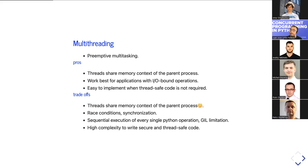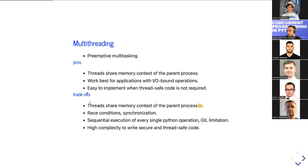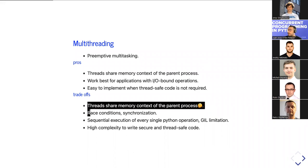Threads sharing memory context is both a pro and a trade-off. If thread-safe code is not required, it's simple. But if we need thread-safe code — for example, carefully updating database connections, pulling from rate-limited APIs — we need to ensure proper locking and careful steps for all shared resources. This relates to race conditions and synchronization.